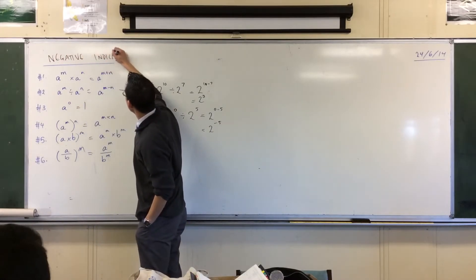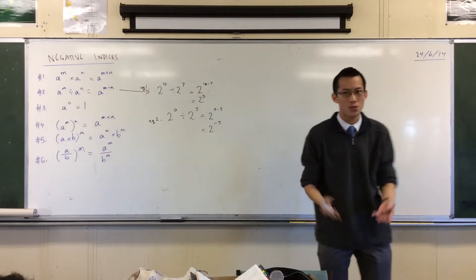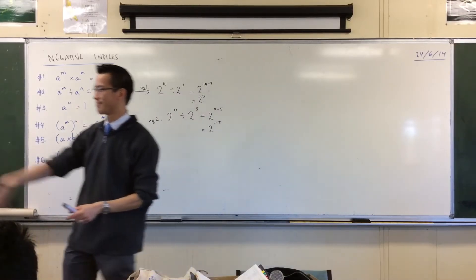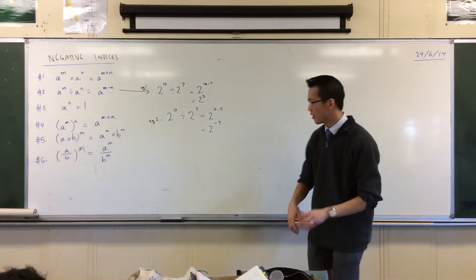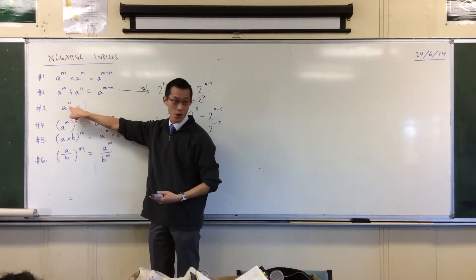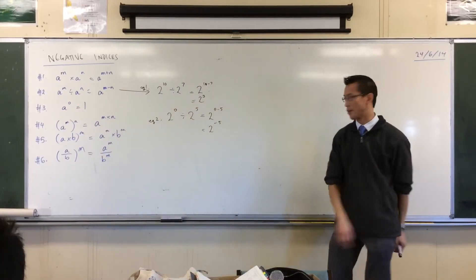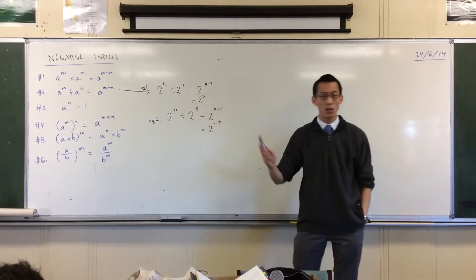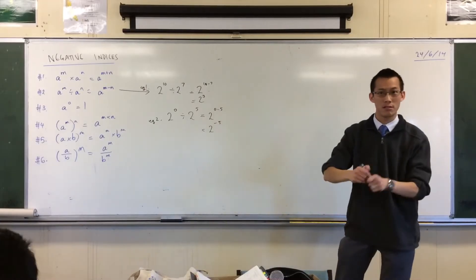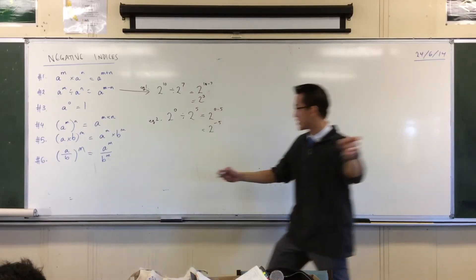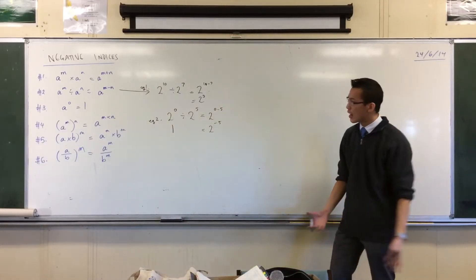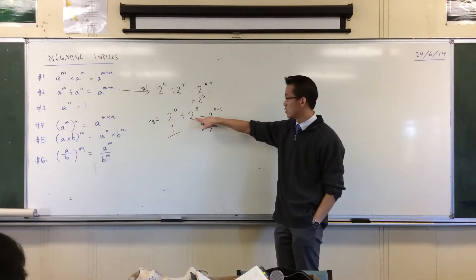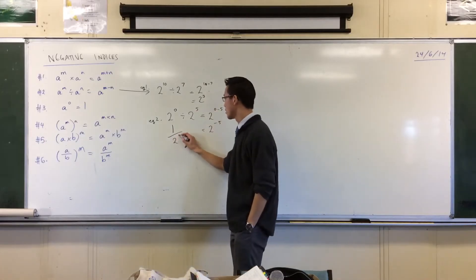So we want to work out what it means when you have a negative index. We're going to do it in a very similar way to how we worked out what happens with a 0 index. You remember how we thought about what would happen if you had a 0 index? Well, we're going to do exactly the same thing with a negative one. Have a look at this left-hand side again. 2 to the power of 0 — that's law number 3. So what is 2 to the power of 0? It's just 1. Now, division — I'm going to write it as a fraction here — and I'm dividing by 2 to the power of 5.